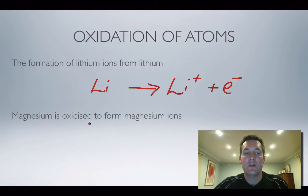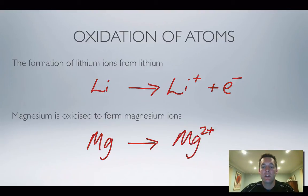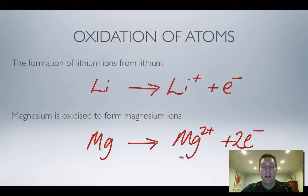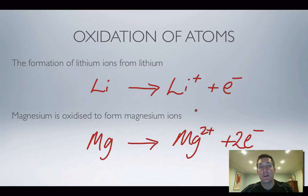Now with magnesium: we're oxidizing it, so it loses electrons. Magnesium turns into magnesium ions. Atoms balance with one on each side, but this time I need two electrons on the right to balance the 2+ charge. Notice that in both oxidation half equations, the electrons are always on the right — that's a quick way to check you've written an oxidation half equation correctly.